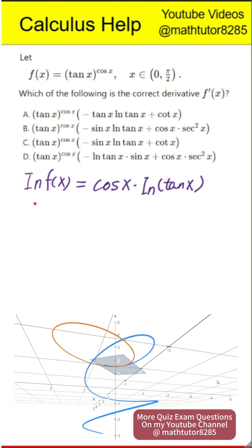Next step, we differentiate both sides. The derivative of the left side is f prime of x divided by f of x. On the right side, the derivative of cosine x is negative sine x, so we get negative sine x times natural log of tangent x.